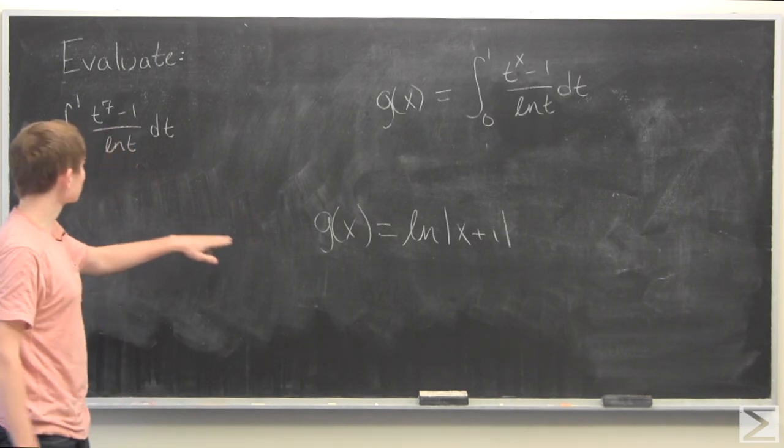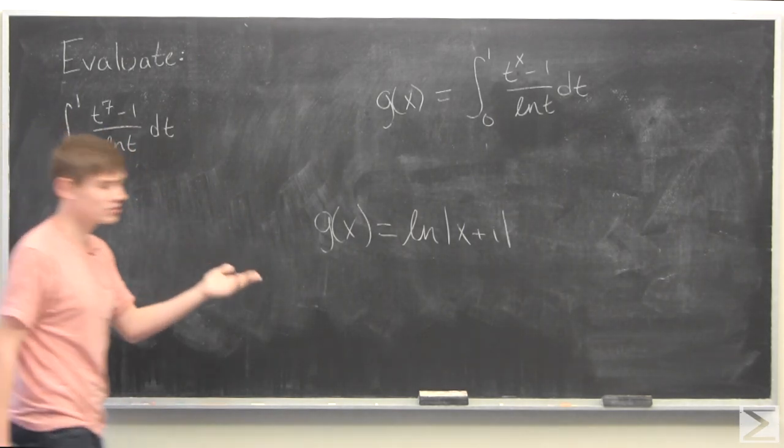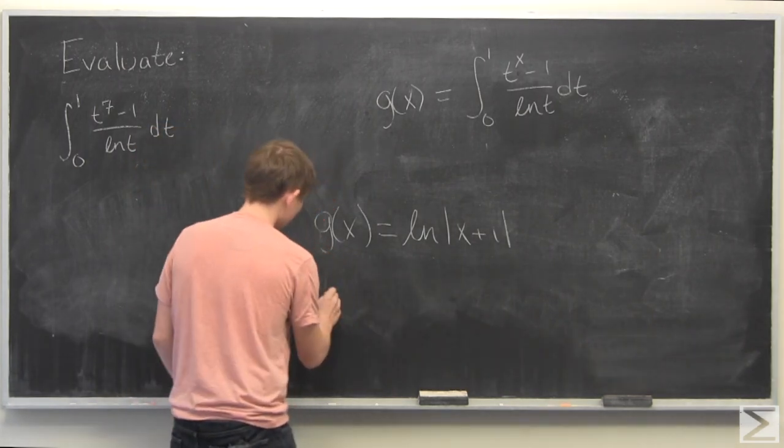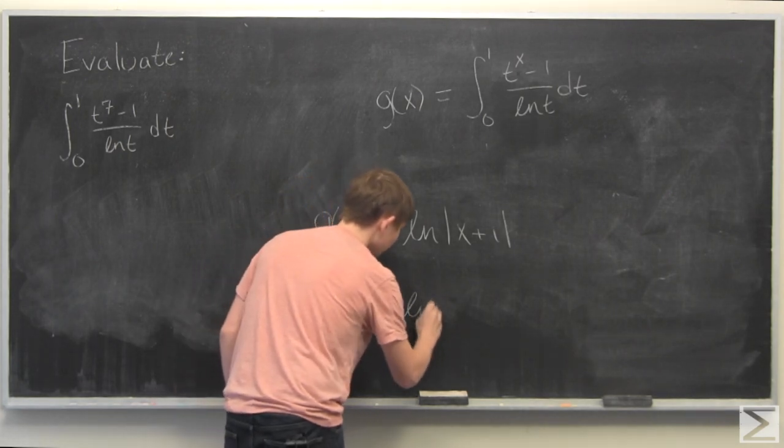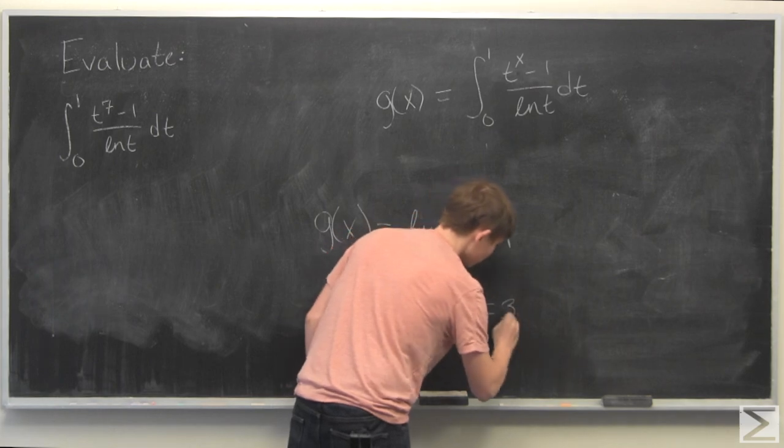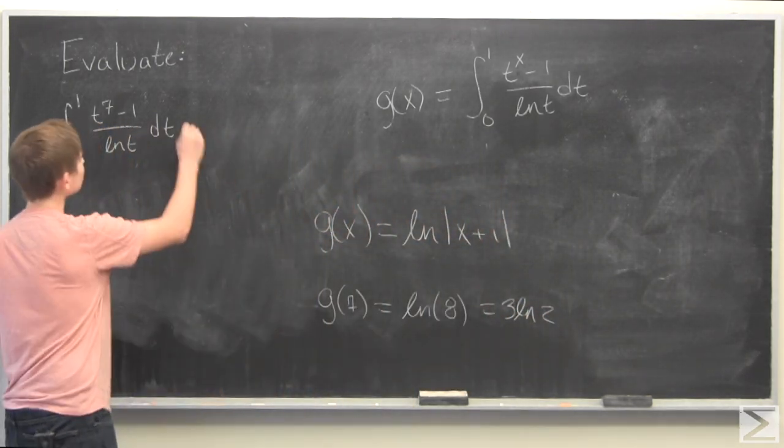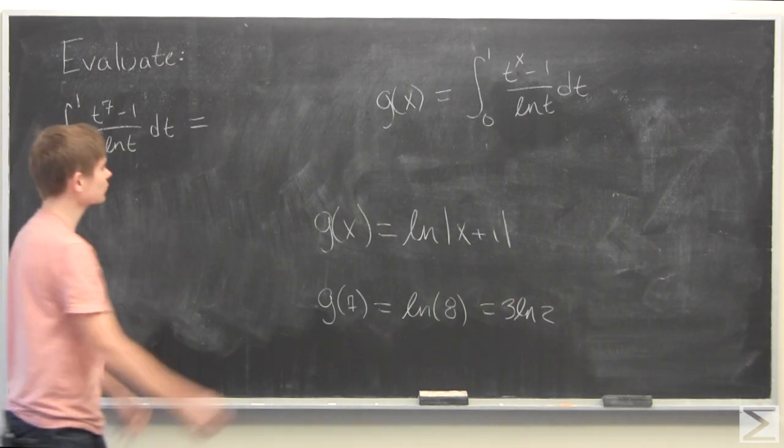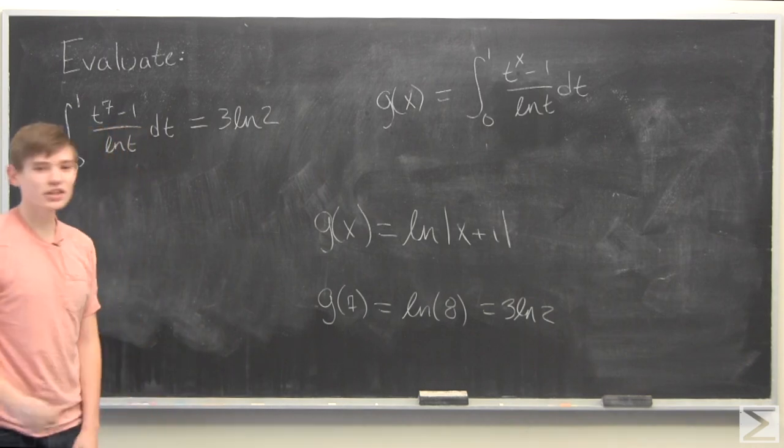So we have g of x is equal to the natural log of x plus 1. As we said before, g of x is equal to this when x is equal to 7. So therefore, g of 7 is equal to natural log of 8, which is just 3 times natural log of 2. Therefore, this integral is equal to 3 natural log of 2.